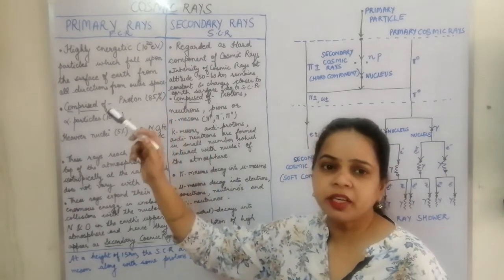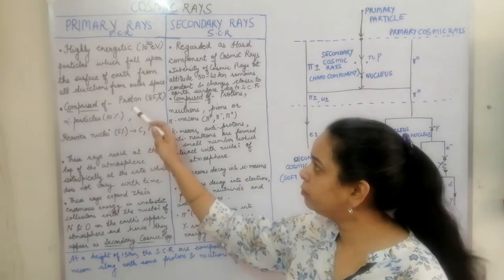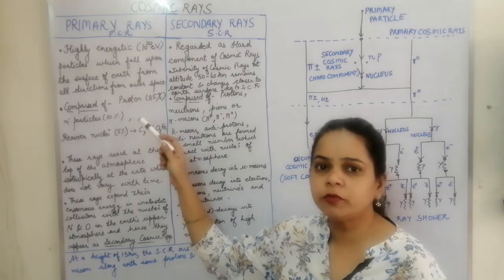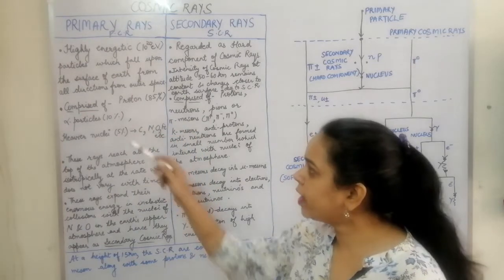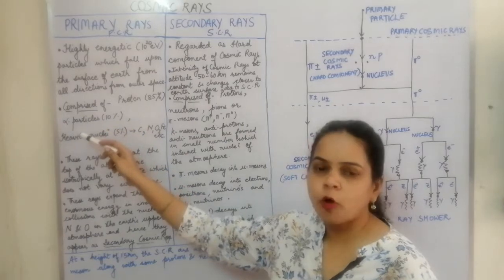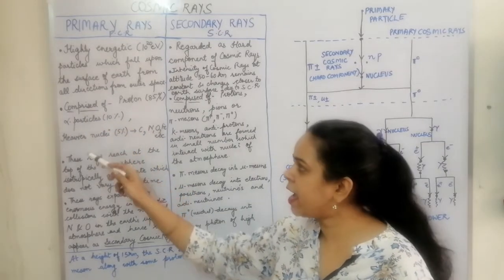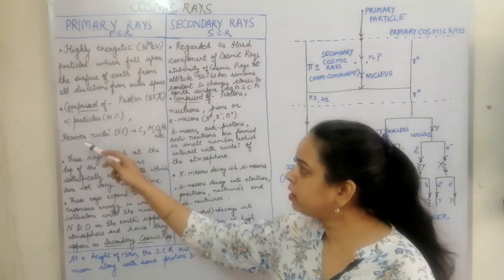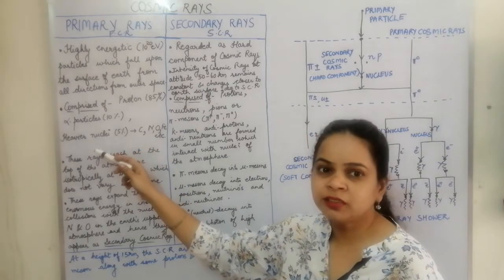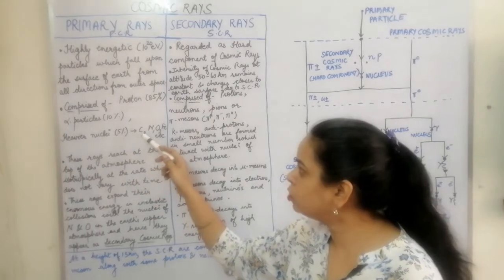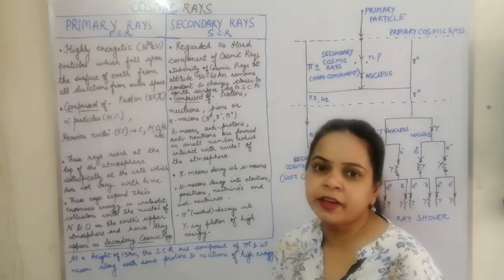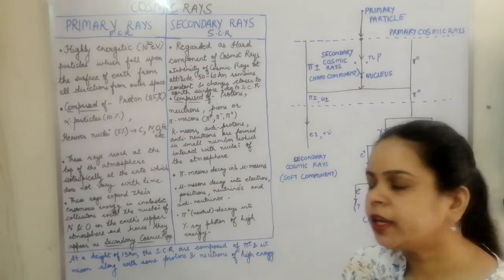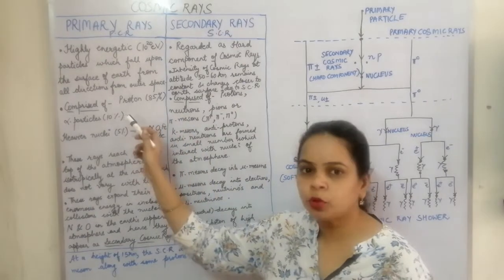The primary rays are generally composed of protons, and these protons form 85% of the primary cosmic rays. Whereas 10% is formed by the alpha particles, and the rest 5% is formed by the heavier nuclei which consists of nitrogen, carbon, oxygen, and iron nuclei. So this is the constituent of the primary rays.